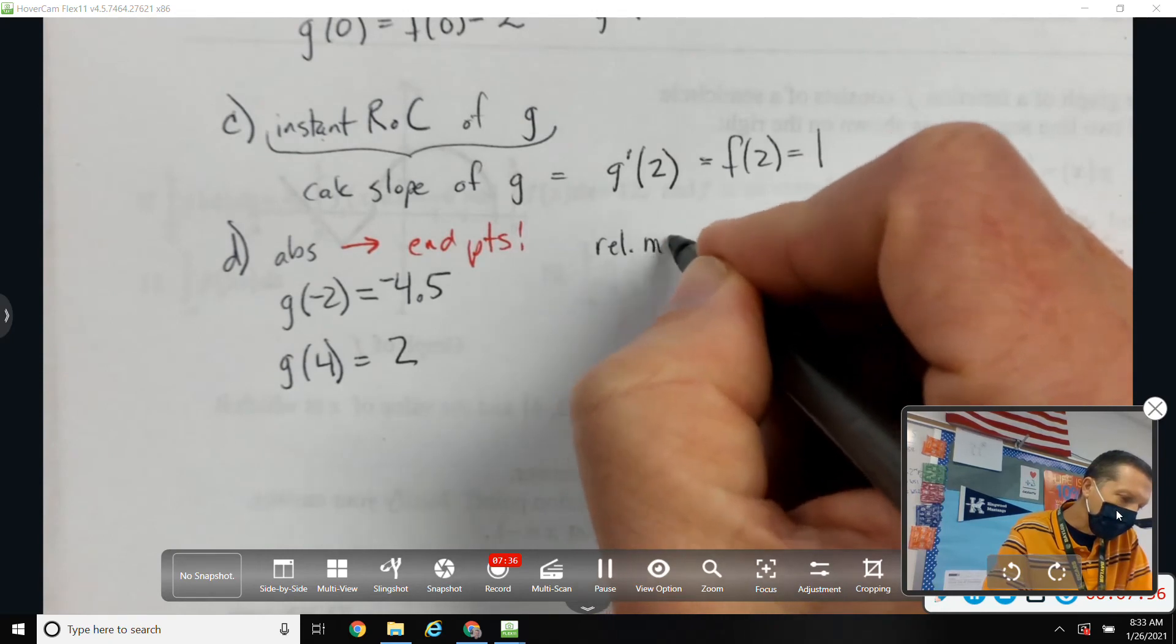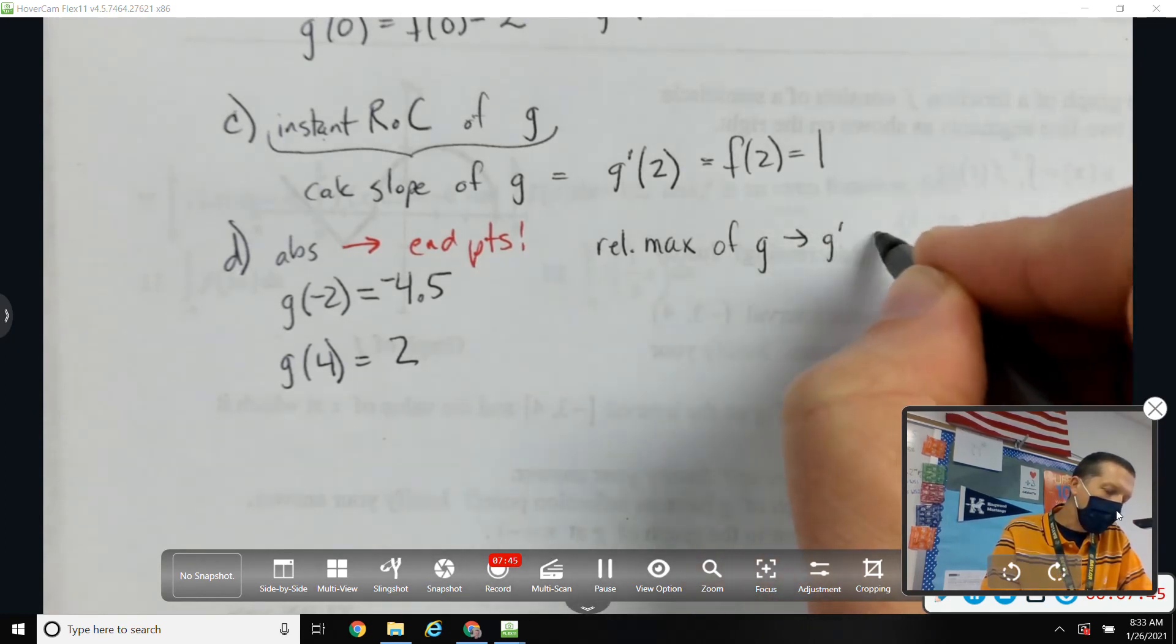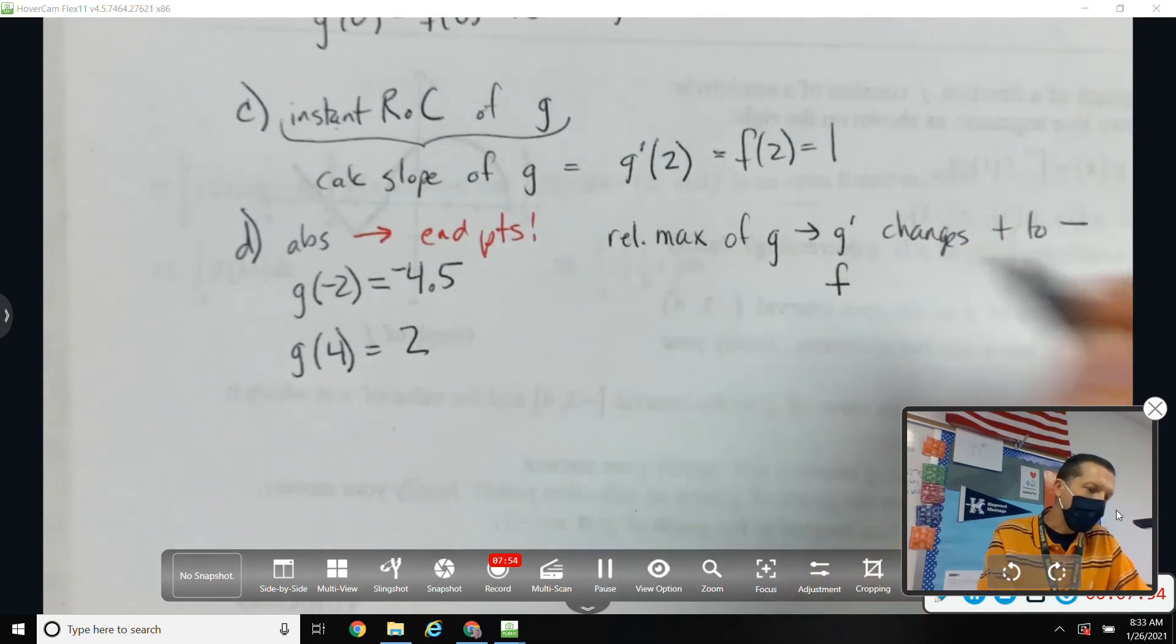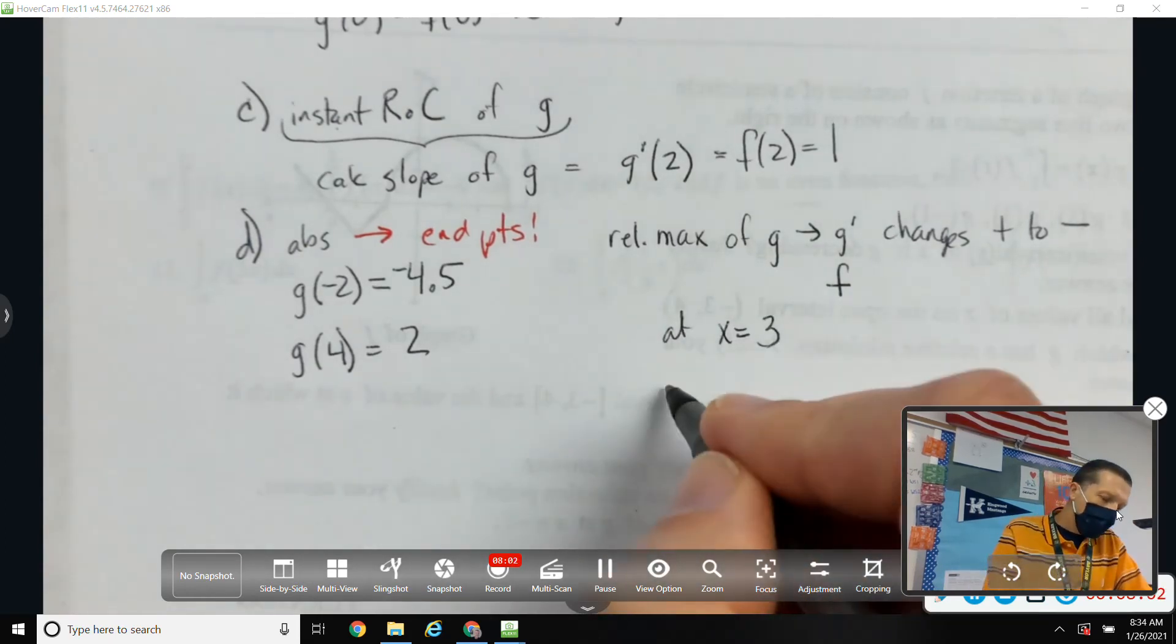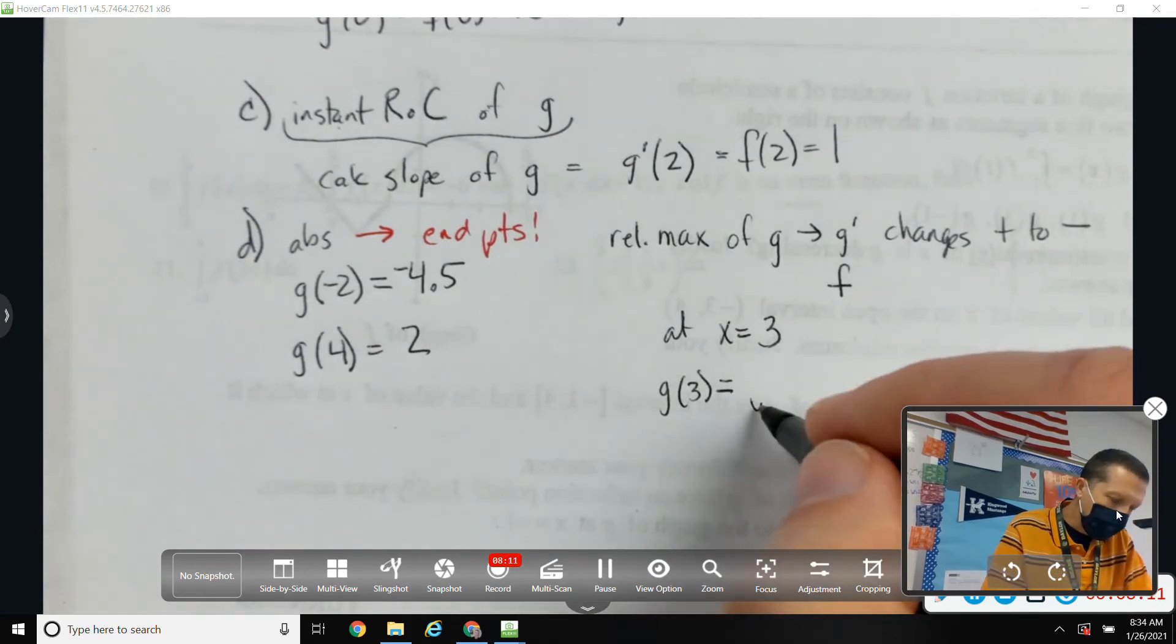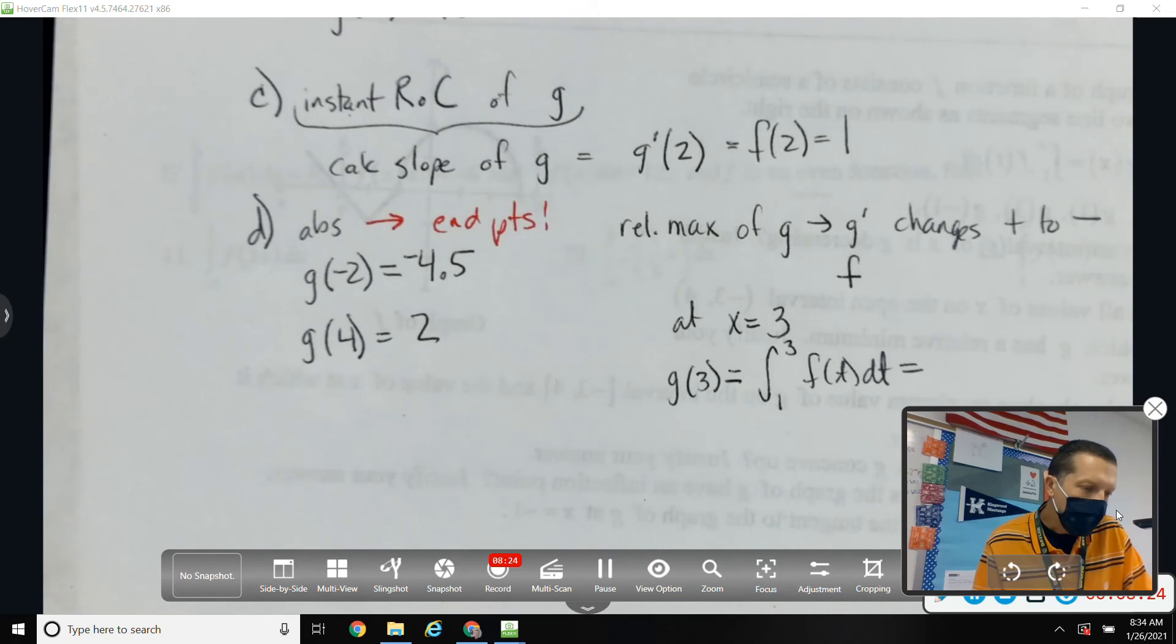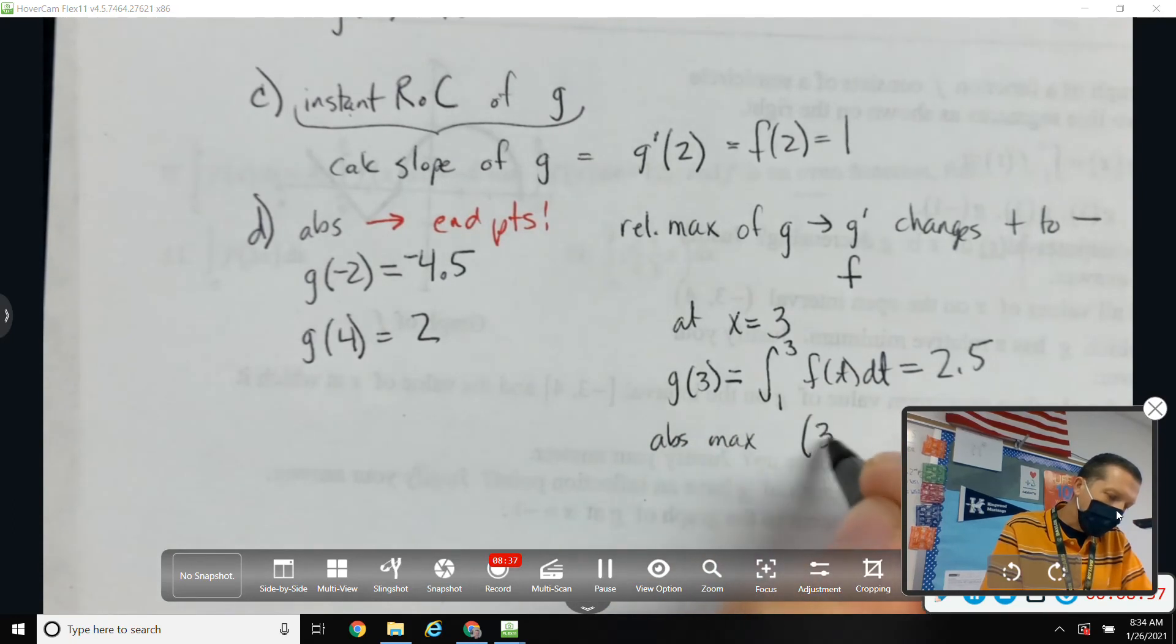The other is, let's find some relative maximums. That would be a relative maximum G would be where G prime changes positive to negative. So that would be where F changes positive to negative. So that happens at X equals 3. So I need G of 3 to throw in the comparison as well. So the area from 1 to 3 of my picture would be 2.5.